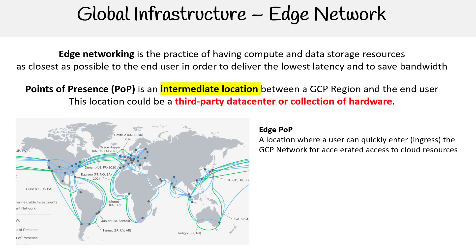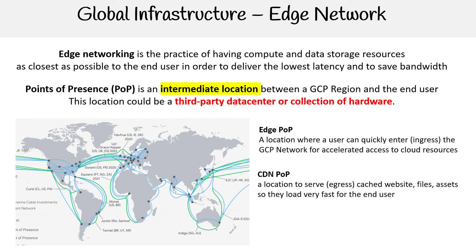The first is Edge POP — a location where a user can quickly enter, or ingress, the GCP network for accelerated access to cloud resources. Then you have a CDN, which is a location to serve, or egress, the network for cached websites, files, and assets so they load very fast for the end user.